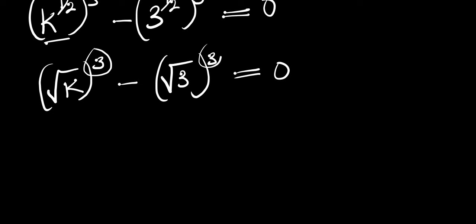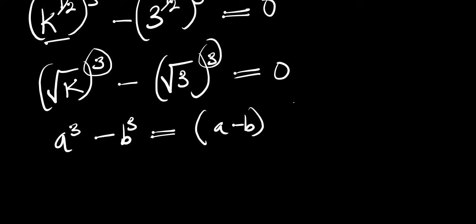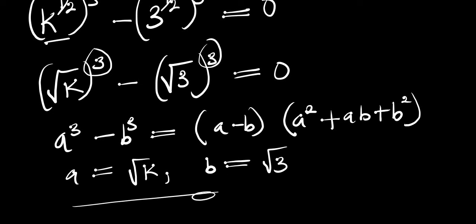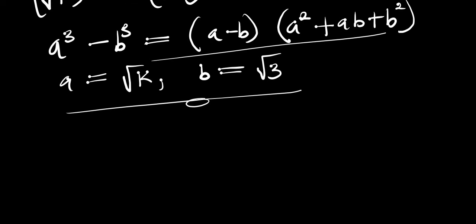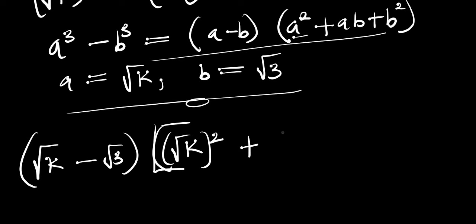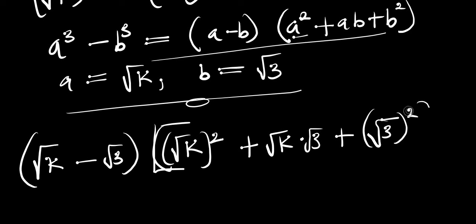We have cubes here, so we can apply the difference of cubes identity: a cubed minus b cubed equals (a minus b)(a squared plus ab plus b squared). In this case, a equals the square root of k and b equals the square root of 3. Substituting, we get: (√k minus √3) times (√k squared plus √k times √3 plus √3 squared) equals 0.